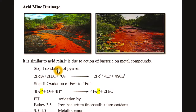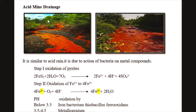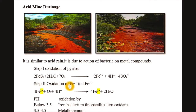In the oxidation of pyrite, several different types of reactions take place. We will see them one by one. First, pyrite gets oxidized into Fe2+. In the second step, oxidation of Fe2+ to Fe3+ takes place. Here you can see Fe2+ is oxidized to Fe3+.